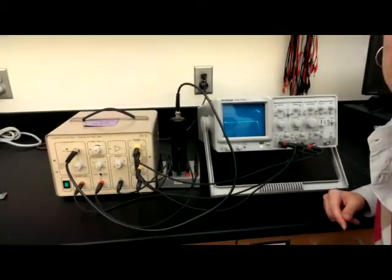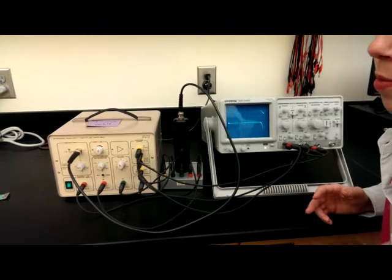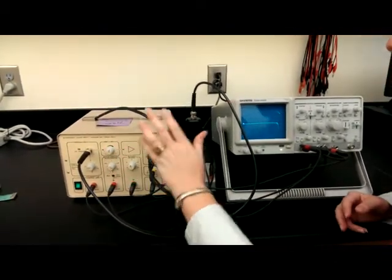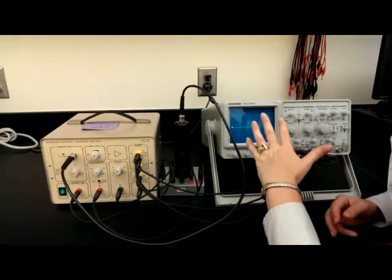This is the Frank-Hertz apparatus. There are three main parts to the experiment you'll be doing. There's the control apparatus, there's the tube itself, and then there's the oscilloscope.